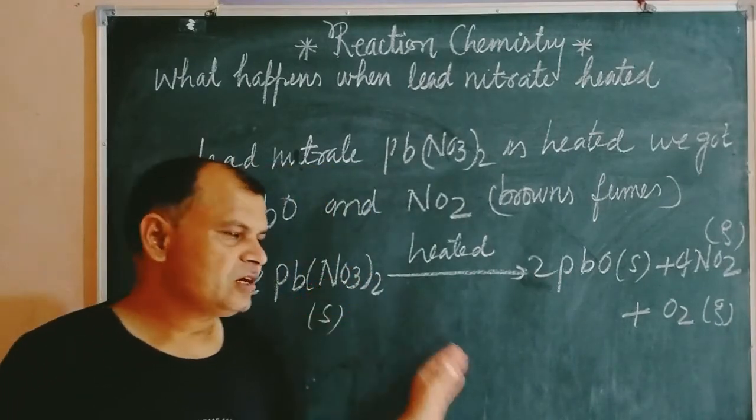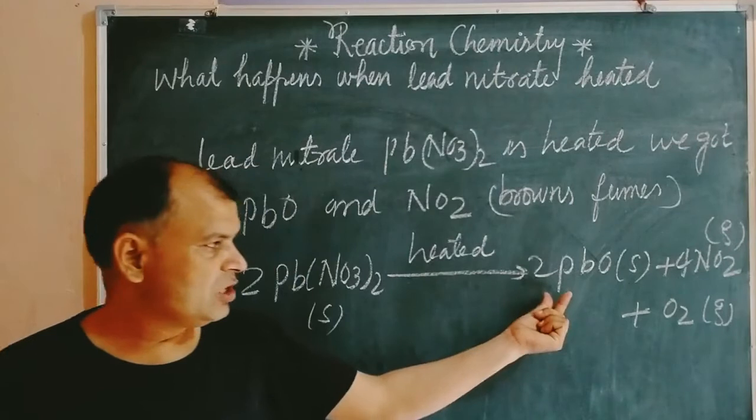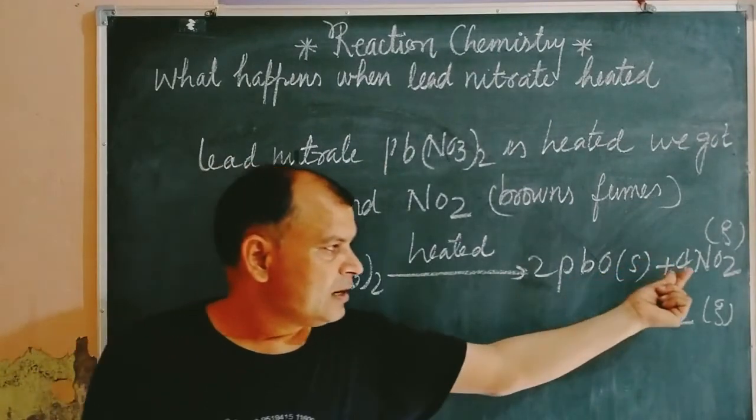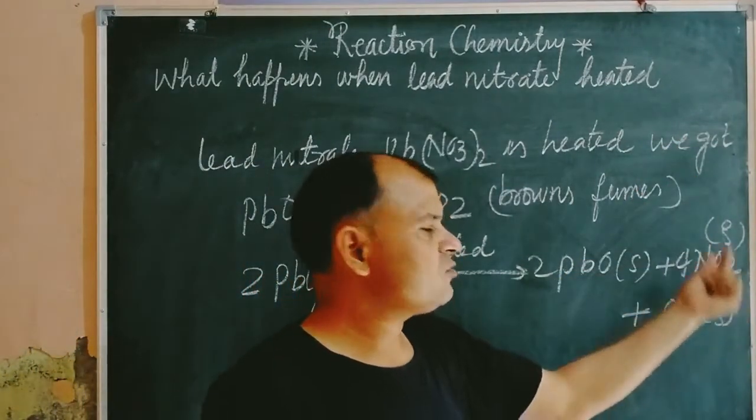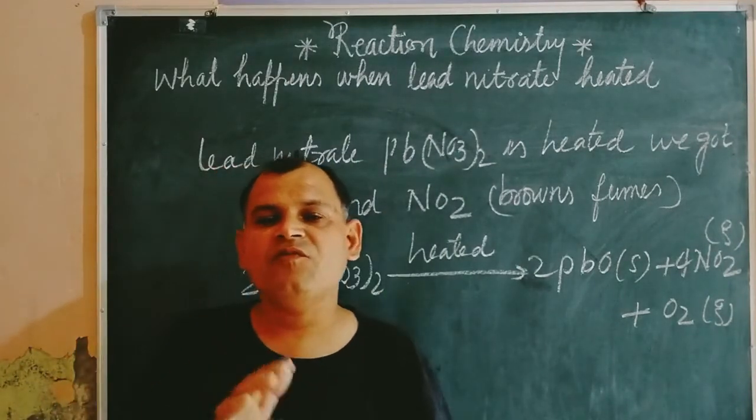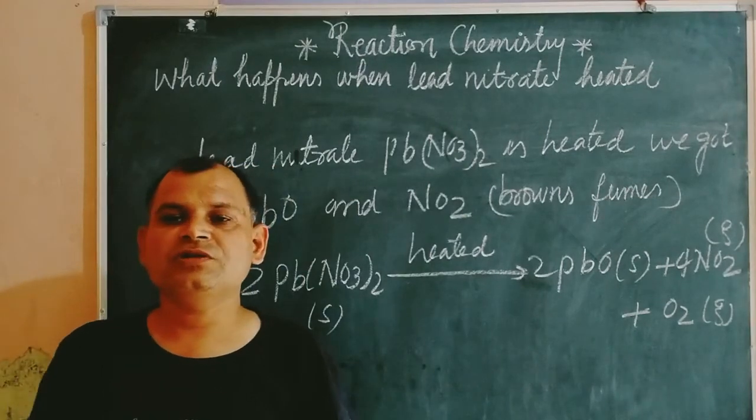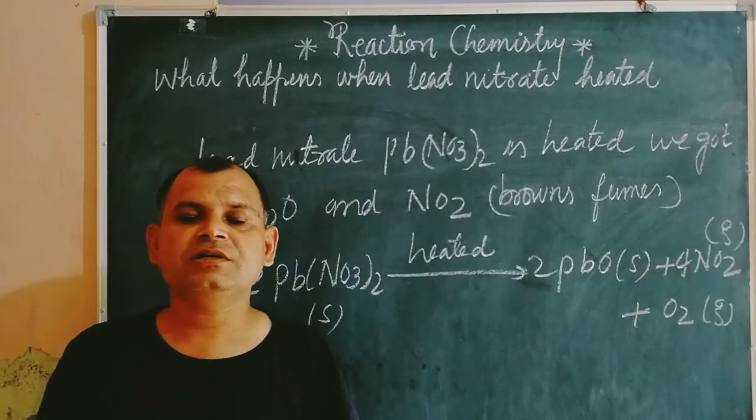So this is the thermal decomposition reaction in which lead nitrate breaks down into lead oxide, nitrogen dioxide, and oxygen. So with the help of heat, this is done. So it is called a thermal decomposition reaction. I hope you got it. Thanks for watching.